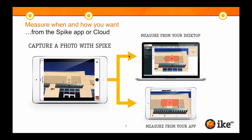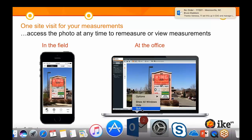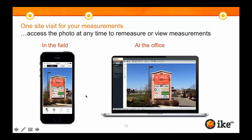You can take dimensions in the field, upload them to our cloud, and take them back to your office. It's a very quick tool, saving you all that upfront cost of wheels turning on bucket trucks and boom trucks for jobs you haven't been awarded. You can measure when and how you want — from the Spike app or the Spike cloud. You take the initial photo with Spike attached to your mobile device, and you can measure from the app or from the desktop whenever you want.